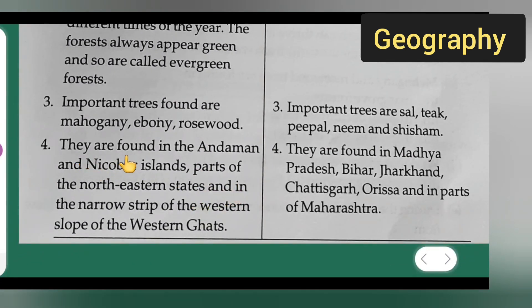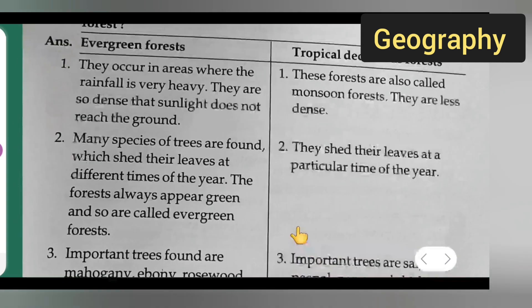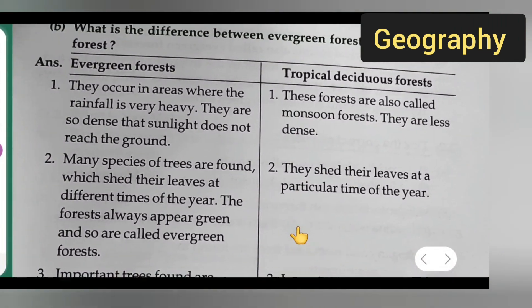Fourth point under evergreen forest: they are found in the Andaman and Nicobar Islands, parts of the northeastern states, and in the narrow strip of the western slopes of the Western Ghats. Fourth point under deciduous forest: they are found in Madhya Pradesh, Bihar, Jharkhand, Chhattisgarh, Odisha, and parts of Maharashtra.